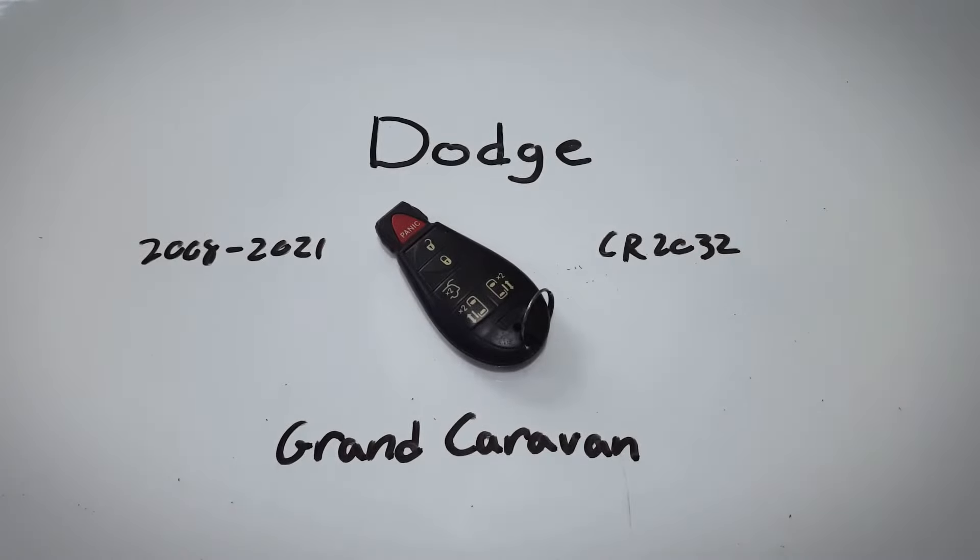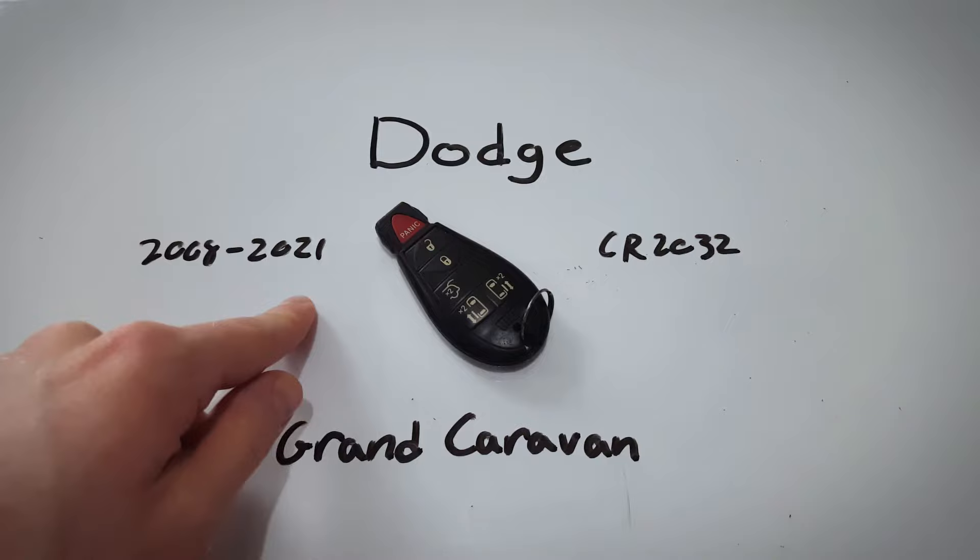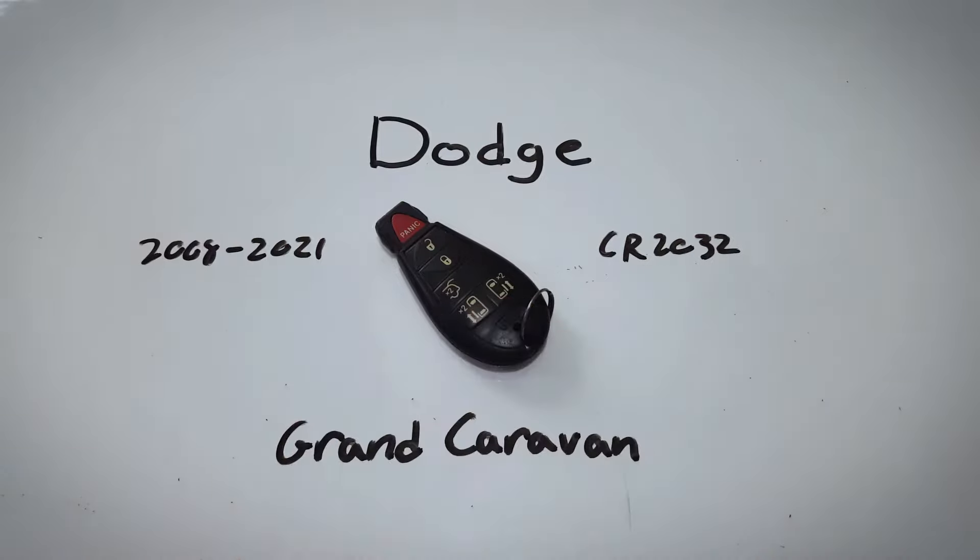In this video I will show you how to change the internal battery in this Dodge Grand Caravan key fob. This key fob has been used since 2008 all the way up to present day and it just takes one of these CR2032 batteries to work.